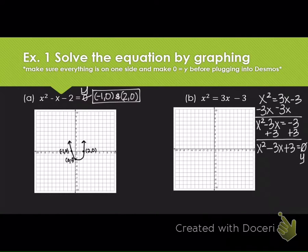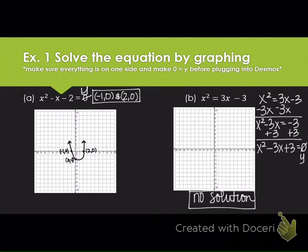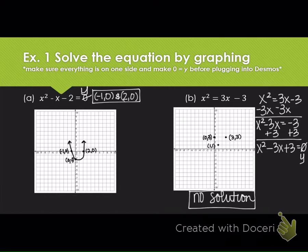Looking at the graph, it doesn't actually touch the x-axis at all, so the answer is no solution. Remember, solutions are the x-intercepts, so if the graph never touches the x-axis there is no solution. We still have to graph it though. I see a distinct point at zero, three and another at three, three, so I'll plot and label both. There's also a point at one, one — I'll plot that and be careful to note it is not the vertex, just another point on the parabola.